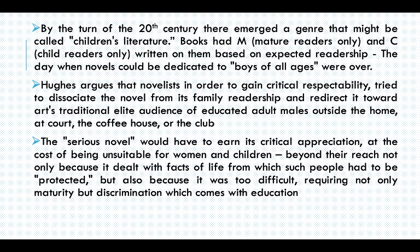But now, by 1880s, young novelists said that they can't take the burden of educating young people, women, and children — they needed a kind of freedom. So there occurred a segregation where the novel becomes serious novels and there occurs a separate category of children's literature. Hughes argues that novelists, in order to gain that critical respectability, had a solution: they wanted to dissociate the novel from its family readership.